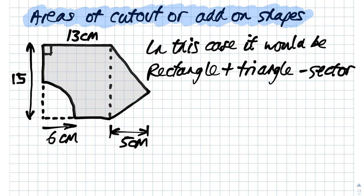We often also have areas that are made up by composite shapes with a bit of a cut out as well. In this case you can see we've got a rectangle plus a triangle, take away a quarter circle.